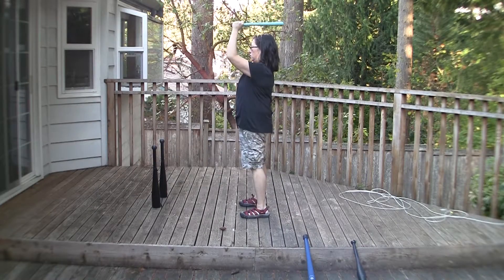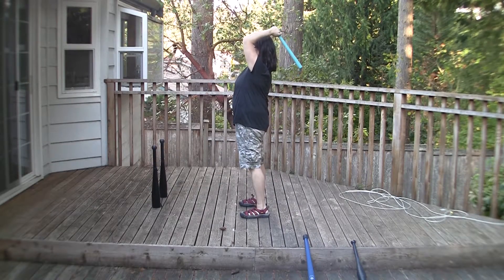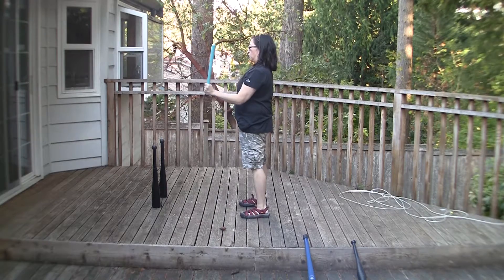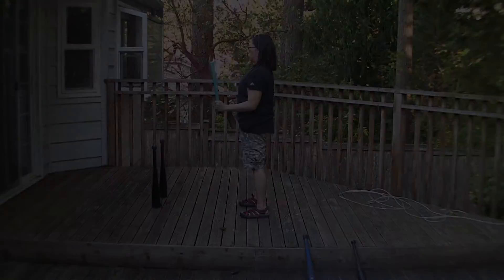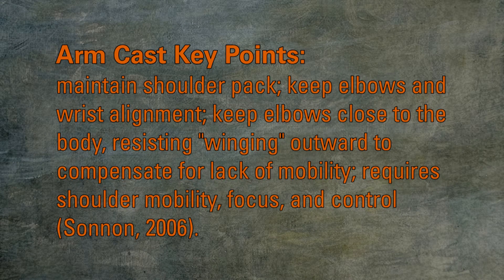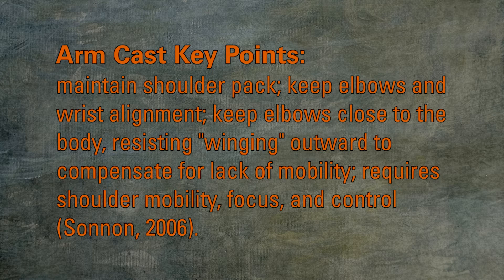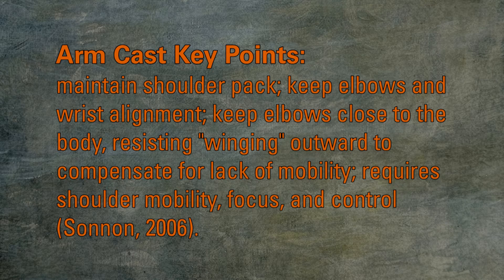From the order position, keeping the 90 degree elbow flexion and straight wrist, perform a slow and controlled arm cast. Slip the barrel close to the body past the ear and behind using shoulder flexion, and bring it back down into order with controlled shoulder extension.